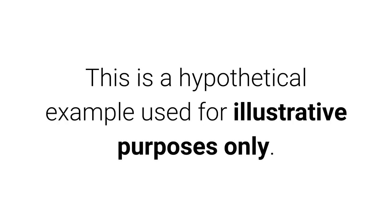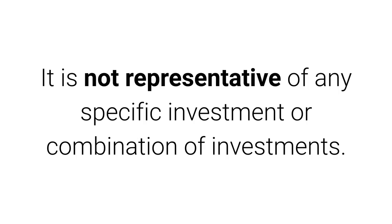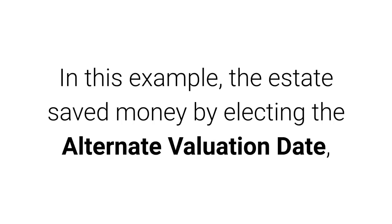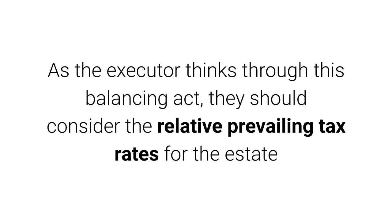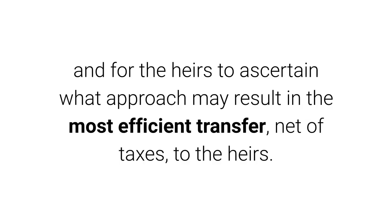This is a hypothetical example used for illustrative purposes only and is not representative of any specific investment or combination of investments. In this example, the estate saved money by electing the alternate valuation date, but the heir was exposed to a lower cost basis and the prospect of paying higher capital gains tax in the future. As the executor thinks through this balancing act, they should consider the relative prevailing tax rates for the estate and for the heirs, to ascertain what approach may result in the most efficient transfer, net of taxes, to the heirs.